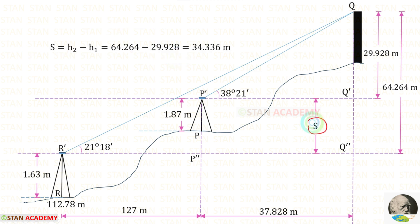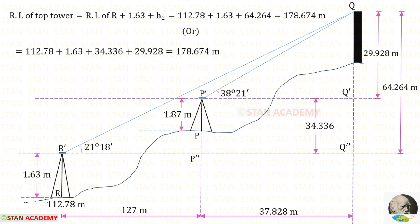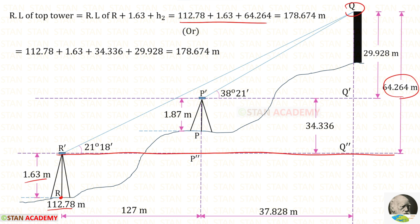S equals H2 minus H1, so S equals 64.264 minus 29.928 equals 34.336 metres. Now to find the reduced level of the top of the tower using the first method: with the reduced level of point R (112.78) we add the height of the instrument (1.63) to reach the instrument axis line, then add H2 (64.264) to get the top. So the reduced level equals 178.674 metres.